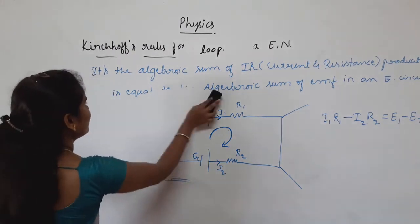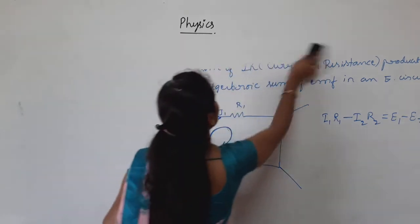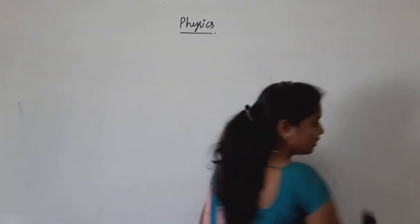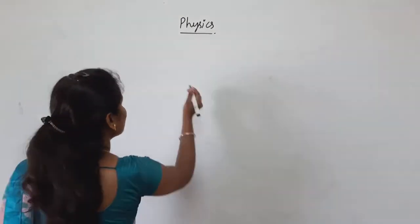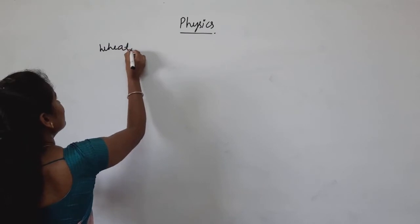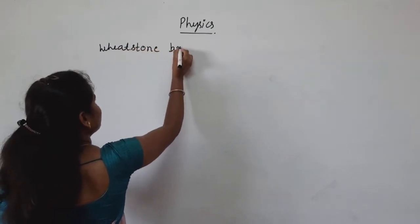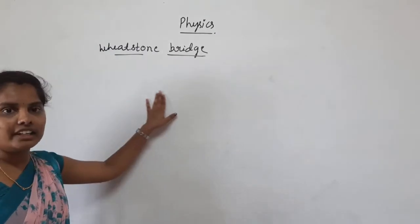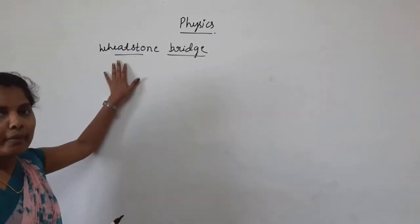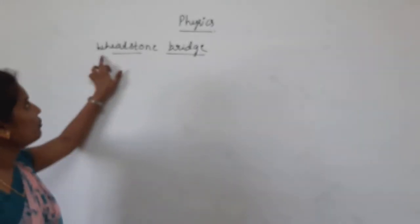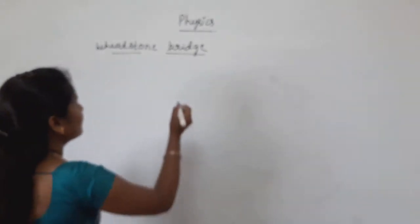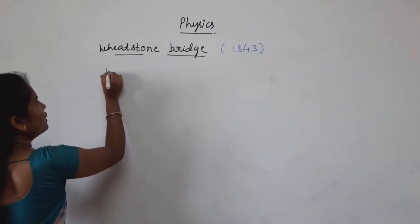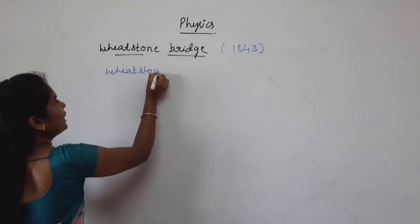The next topic is the Wheatstone bridge. It is also a type of electrical network. It was discovered by the scientist Wheatstone in the year 1843. He constructed this network.